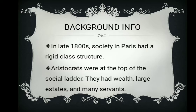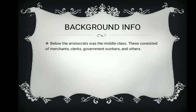Aristocrats were at the top of the social ladder. These people had great wealth, large estates, land, money, and many servants. Below the aristocrats came the middle class, which mainly consisted of merchants, clerks, government workers, and others. In this story, we will talk about the family of a clerk and how they manage their household.